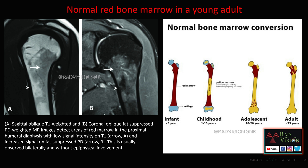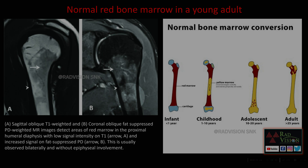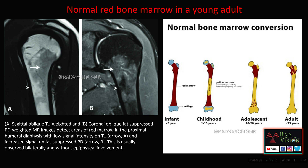Coming to the first one — normal variants — that is normal red bone marrow in an adult. Here you can see this is the normal red marrow in the proximal humerus, which is low signal on T1-weighted images and showing high signal on fat-suppressed PD sequences. This is nothing but normal red marrow in an adult.